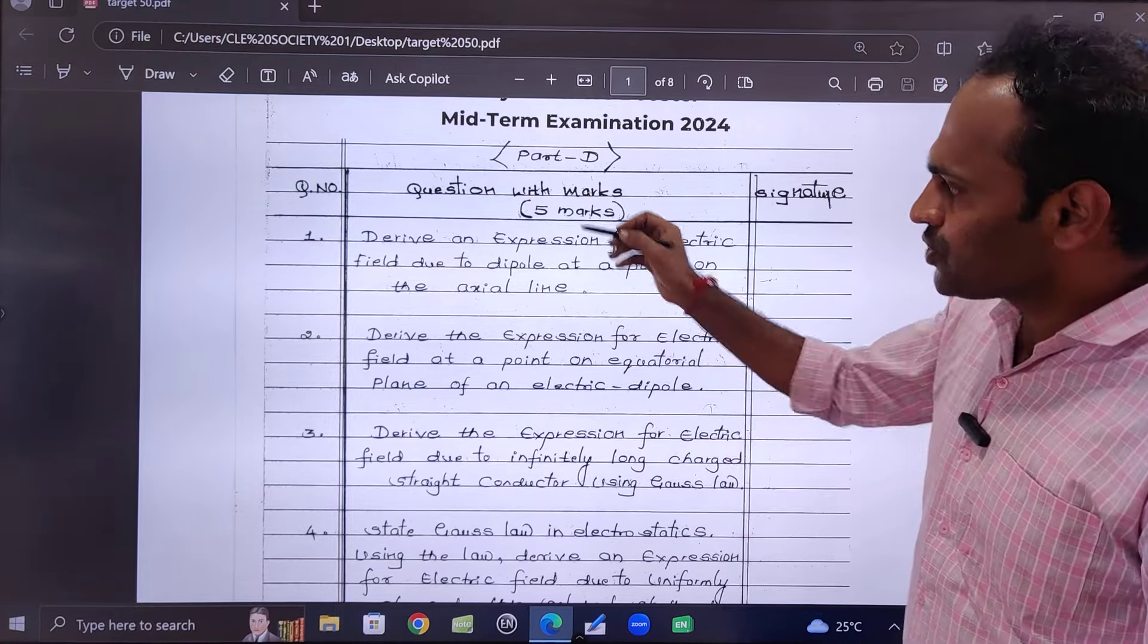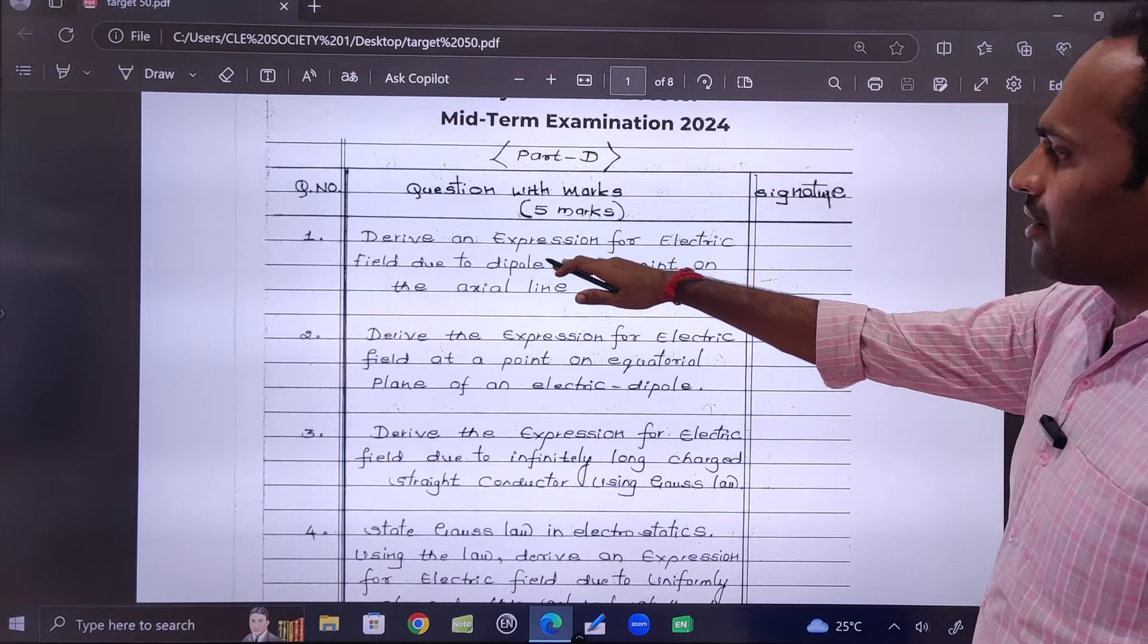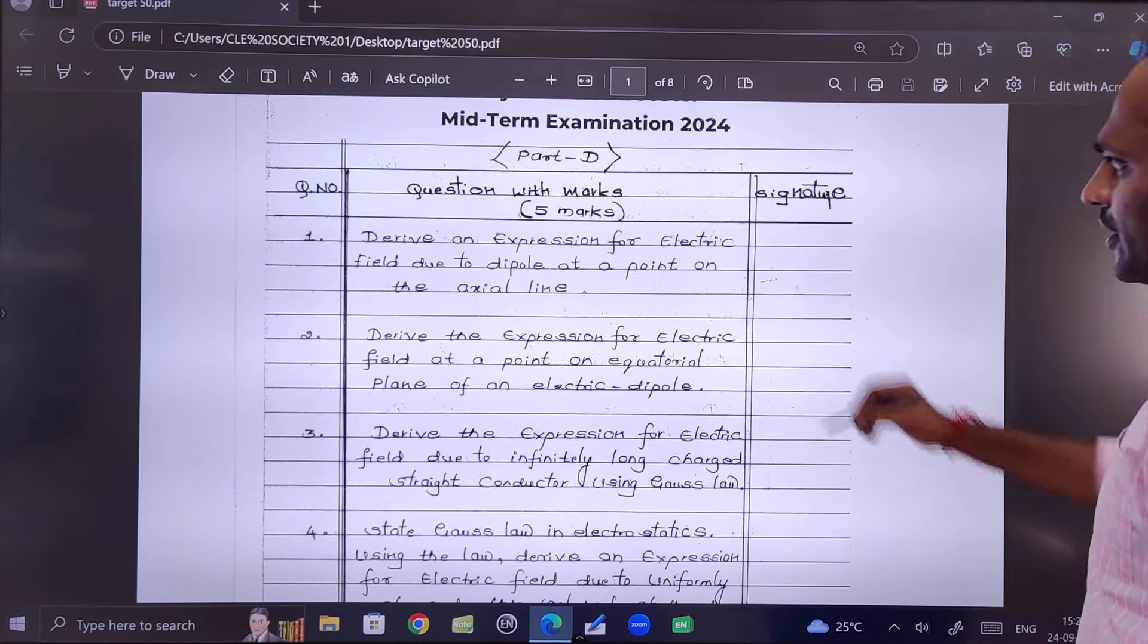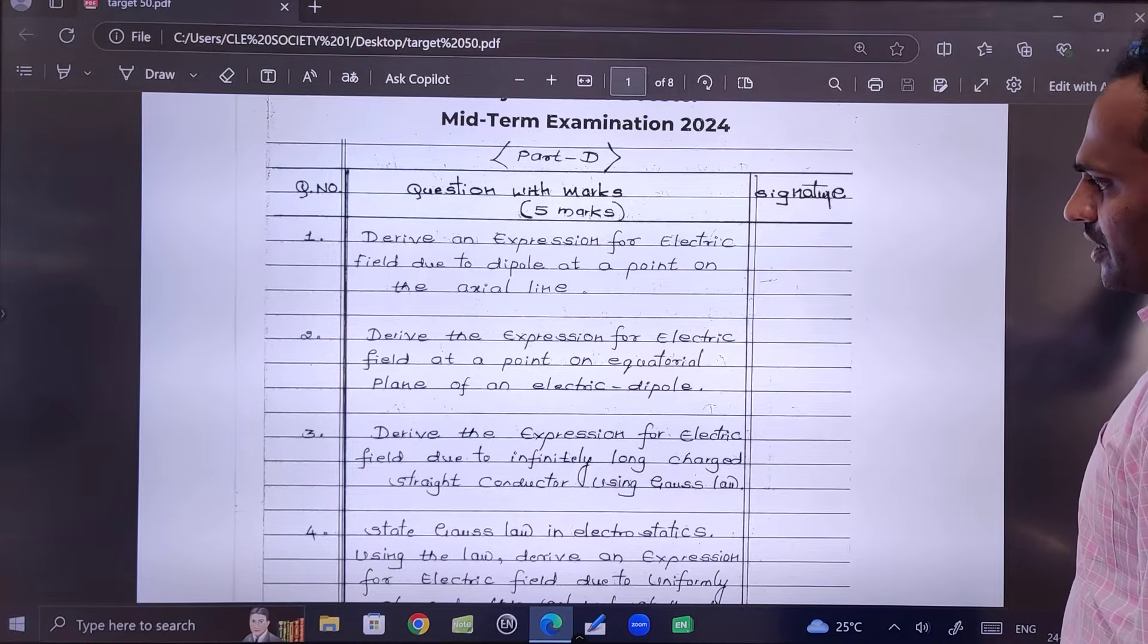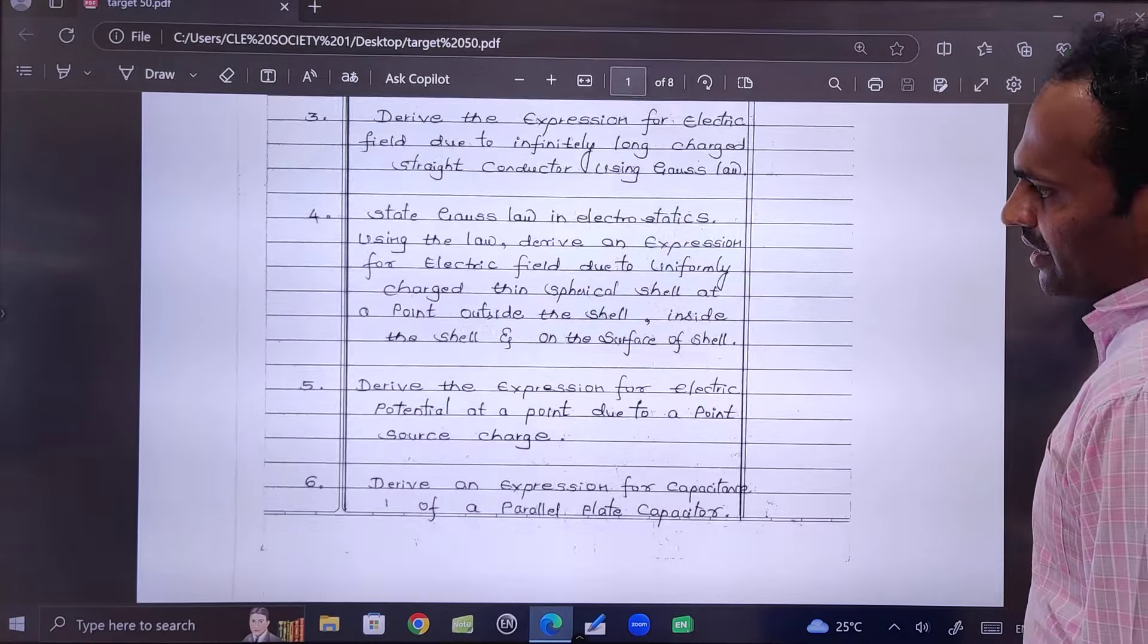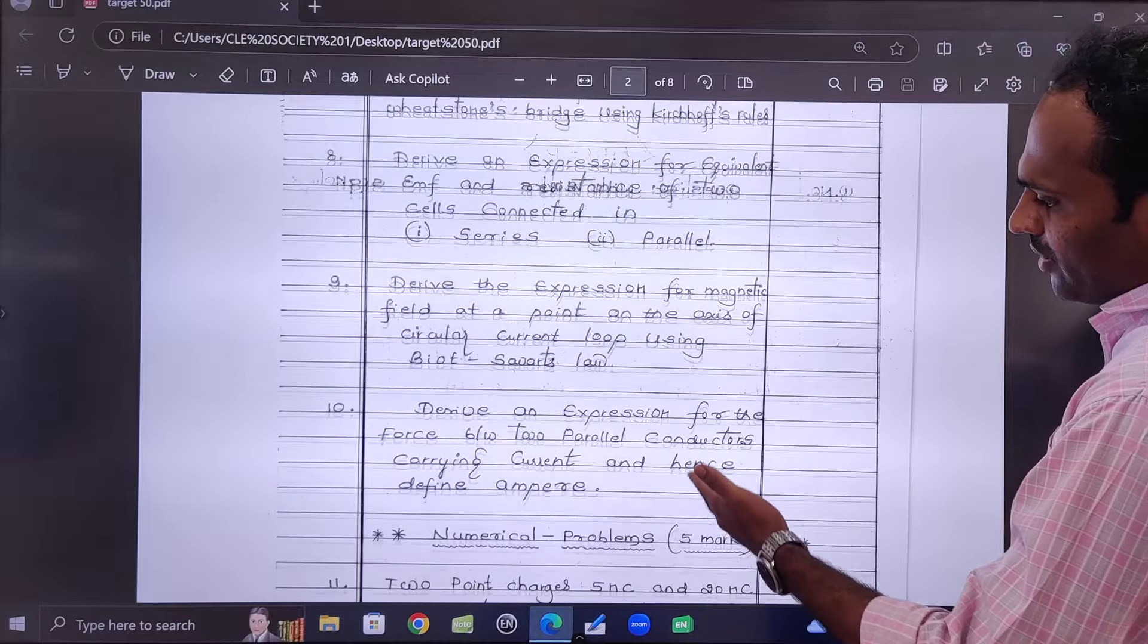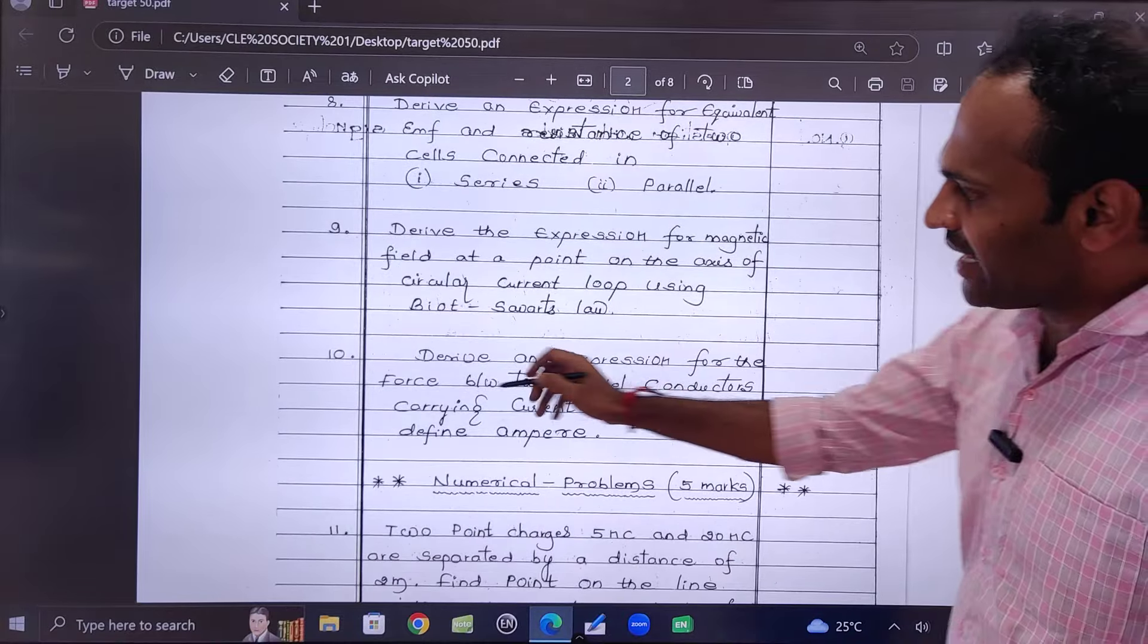The five marks derivations start with the first chapter: derive the expression for electric field due to dipole at axial point and equatorial point. Then second chapter, third chapter, fourth chapter - like this the five marks derivations are included.